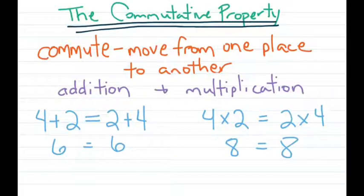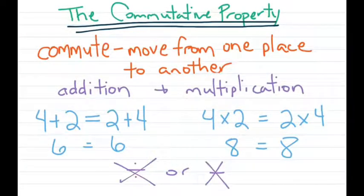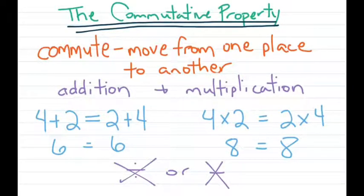Now what the commutative property does not work with — and you'll find this is common throughout — is division or subtraction. It definitely doesn't work with those two operations. So make sure when you're using the commutative property, you're sticking to addition and multiplication.